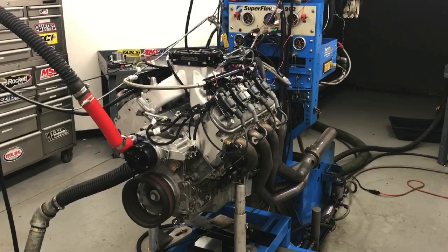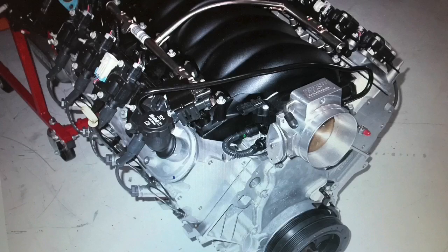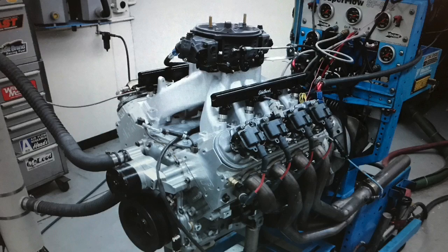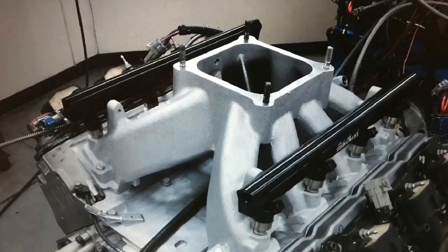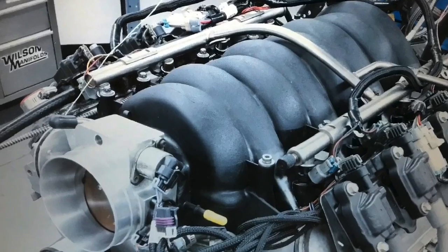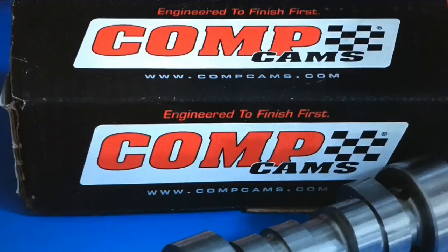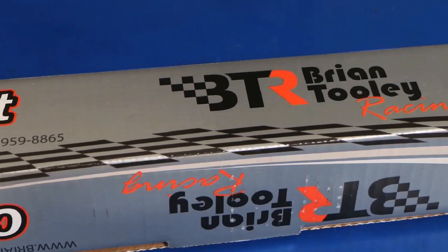In this video, we're going to compare a long runner and a short runner intake. Not only that, we're going to do it on two displacements, a 6.2 liter and a 416 stroker. We'll compare an Edelbrock Super Victor short runner intake to the factory LS3 long runner intake. We'll compare that on an LS3 crate motor with a camshaft and a 416 stroker with even more camshaft. So which one wins?